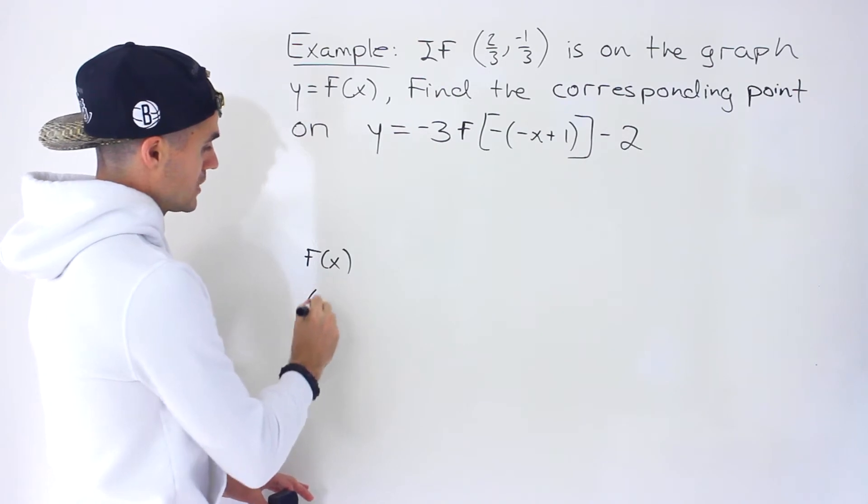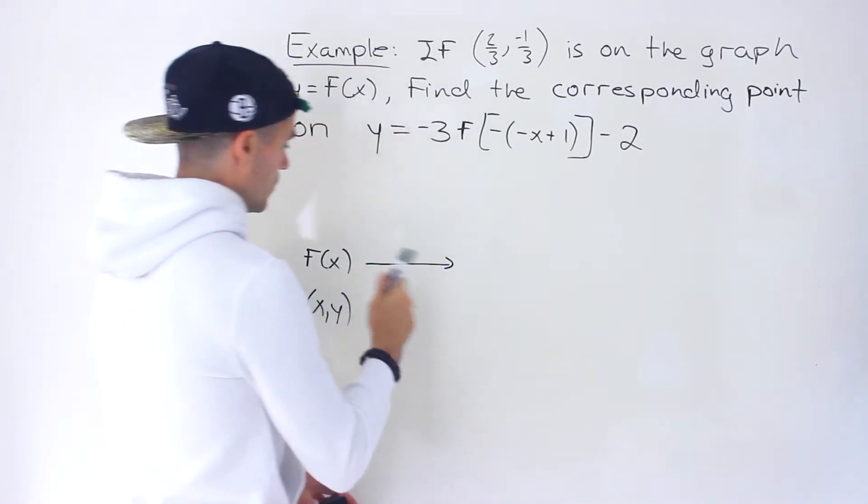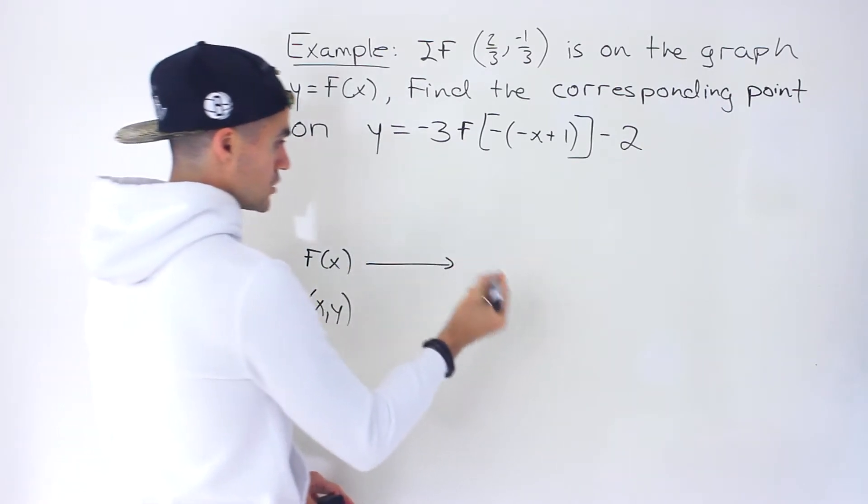All we're told in this particular example is that that coordinate is on this function. So just in general, if you take any coordinate on a parent function, and then we take this parent function, transform it...